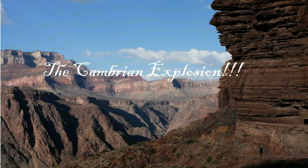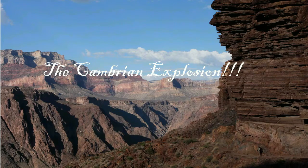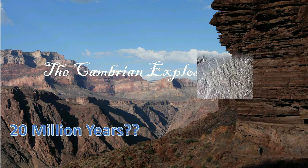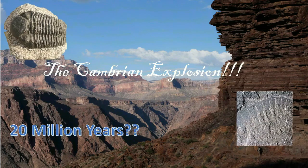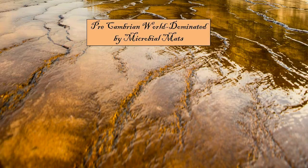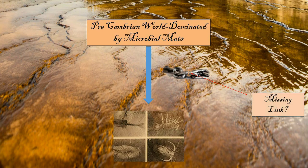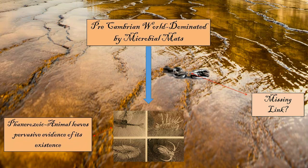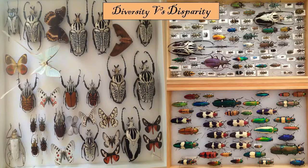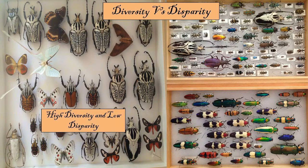The Cambrian Explosion is a unique event in Earth's history that spanned around 20 million years. During this time, fossils with full body plans first appeared in the fossil record. This heavily contrasts to the pre-Cambrian world, where the sedimentary record is essentially devoid of animal fossils, and to the Phanerozoic, where animal life leaves persuasive evidence of its existence, both as body fossils and as disturbers of the sediment. The causality of diversity and disparity seen in the Cambrian Explosion is a striking aspect of planet Earth's diversification of fauna.